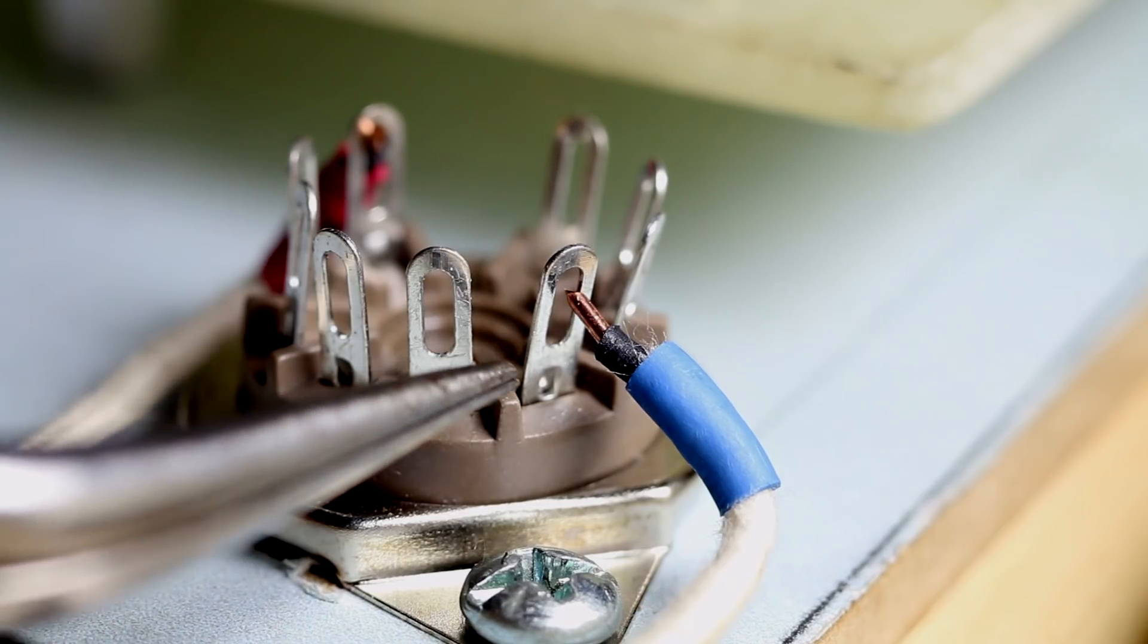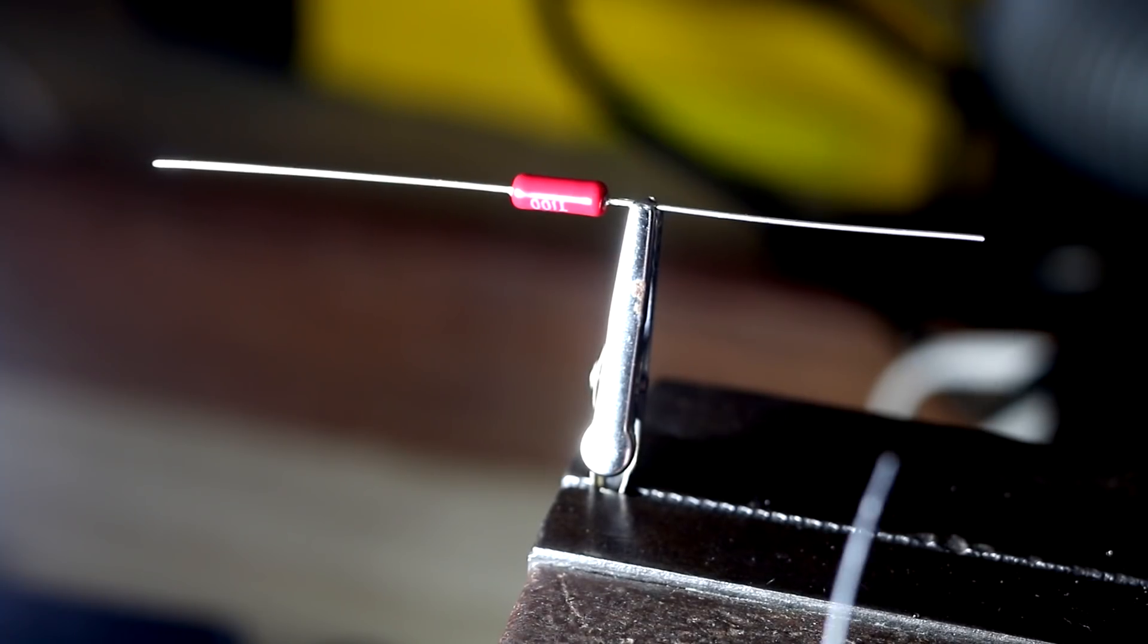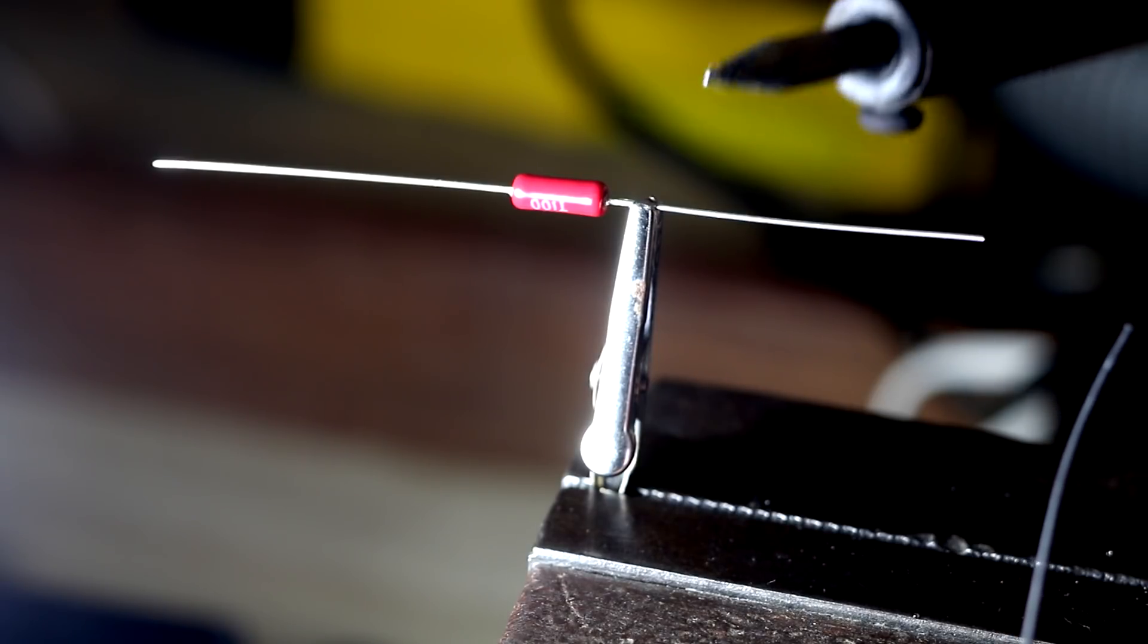We'll tin these two lugs and also tin the end of this wire here. A good way to hold the component if you want to have your hands free is to use an alligator clip, and that also acts as a heat sink.